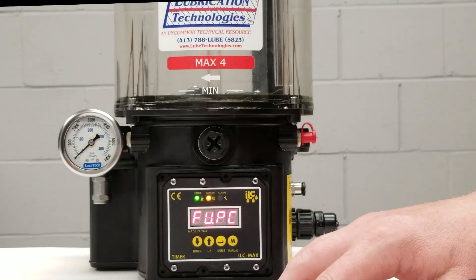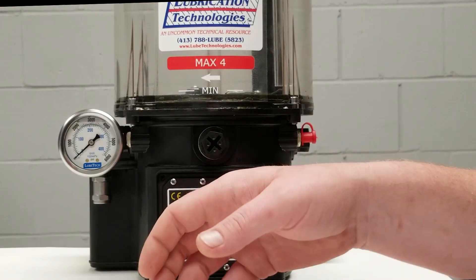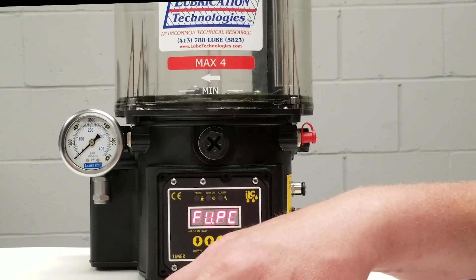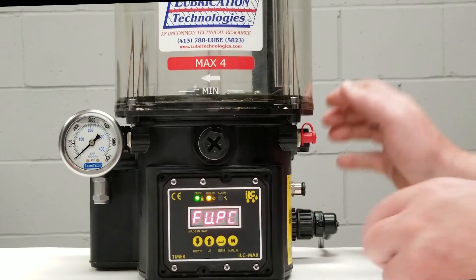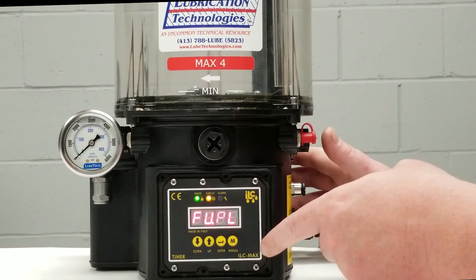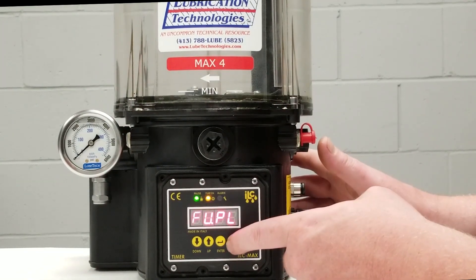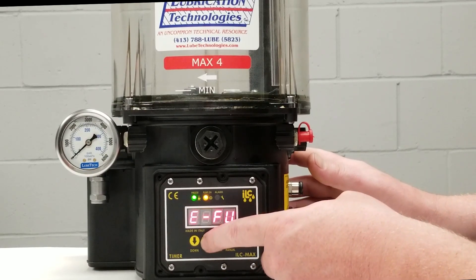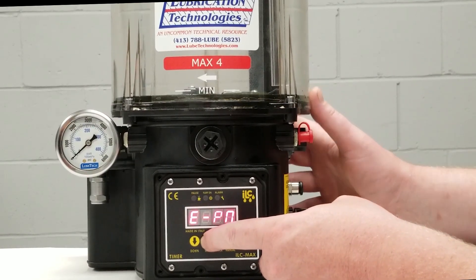And what we're going to be looking for—again we have a document we can send to our customers that will help walk you through this—but we need to be in FU-PL. Once we're there we're going to go ahead and press our M button. And then we're going to press the up key.